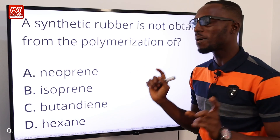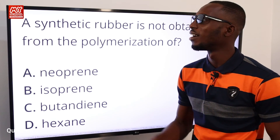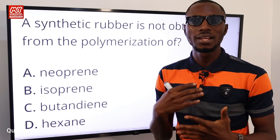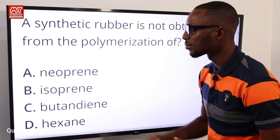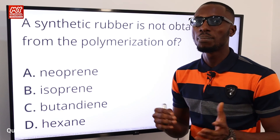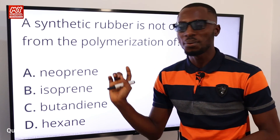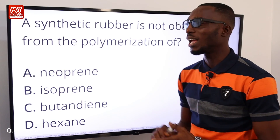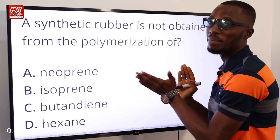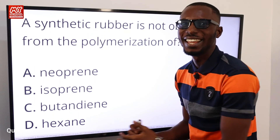Question eight: synthetic rubber is NOT obtained from the polymerization of which of the following? Recall polymerization brings together several monomers to form a larger molecule. Option A — neoprene — is a trade name for polychloroprene, a synthetic rubber. Option B — isoprene — is a monomer of synthetic rubber. Option C — butadiene — is also a monomer of synthetic rubber. Option D — hexane — is actually the hydrocarbon solvent in which polymerization takes place, not a monomer. So the answer is option D.